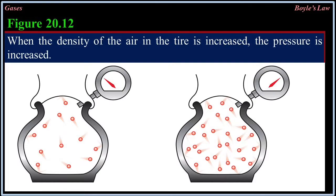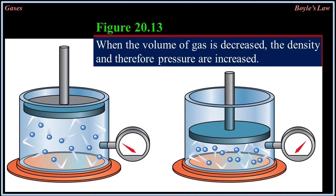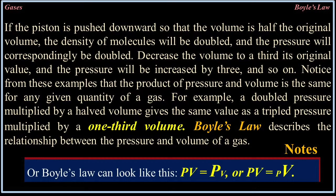Figure 20.12: When the density of the air in the tire is increased, the pressure is increased. Figure 20.13: When the volume of gas is decreased, the density and therefore pressure are increased. If the piston is pushed downward so that the volume is half the original volume, the density of molecules will be doubled and the pressure correspondingly doubled. Decrease the volume to a third its original value and the pressure will be tripled. Notice that the product of pressure and volume is the same for any given quantity of gas — for example, double pressure multiplied by half volume gives the same value as triple pressure multiplied by one-third volume.